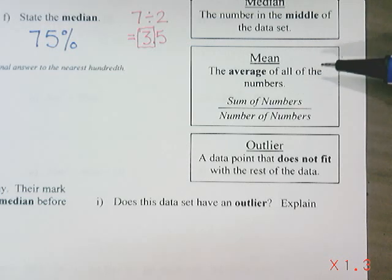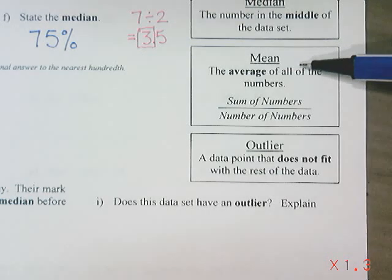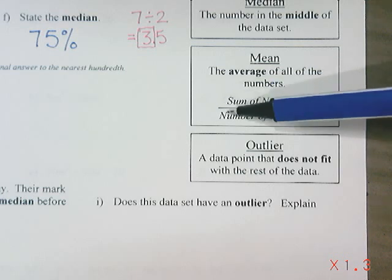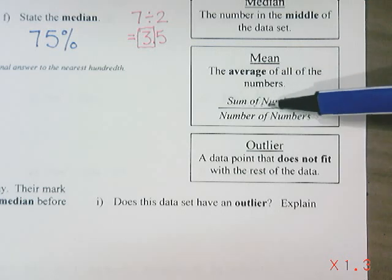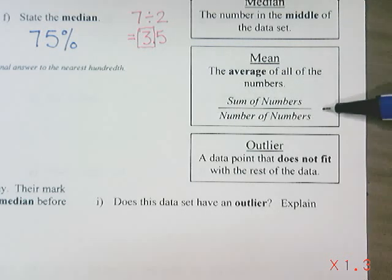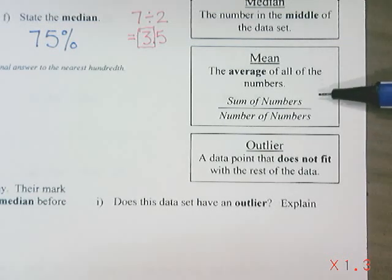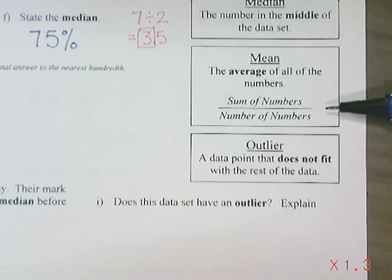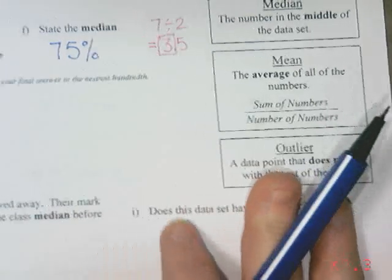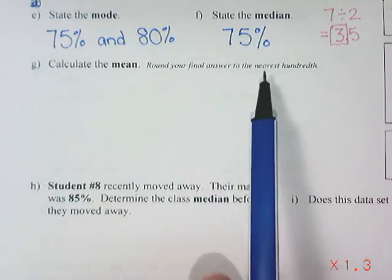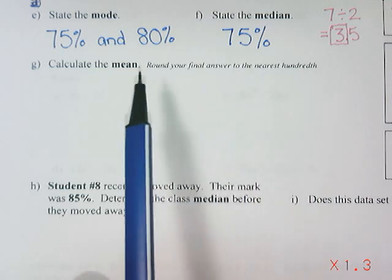A word we often hear instead of mean is average. To get the mean, we take all of the numbers and add them together — that's what 'sum of numbers' means — and then we divide by the number of numbers, meaning how many numbers we have in our data set. So we add all the numbers together and divide by the count.